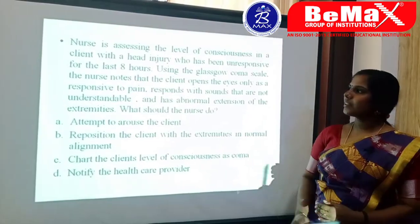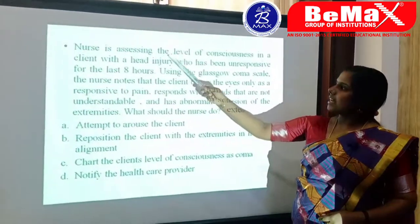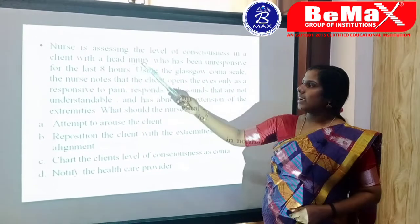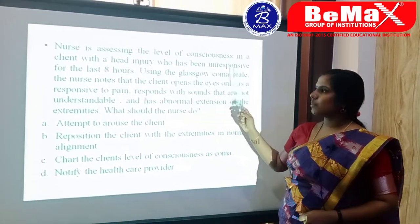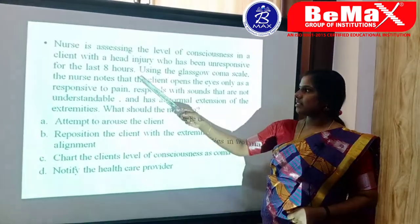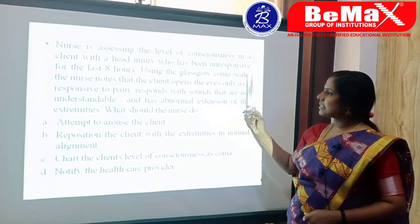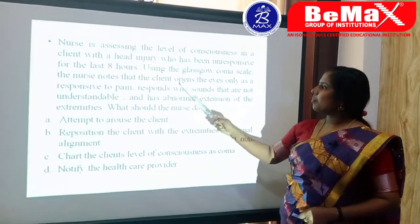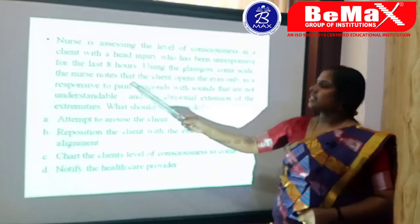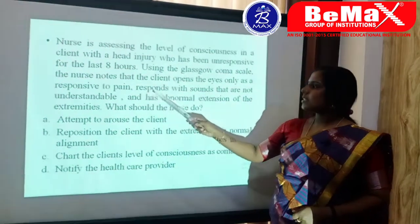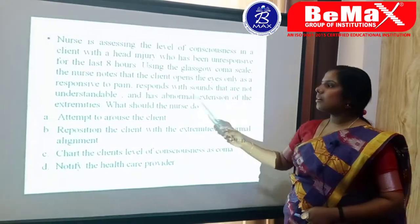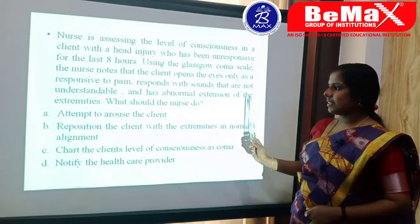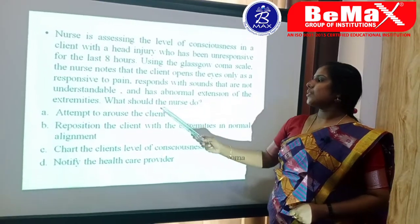Let's move. A nurse is assessing the level of consciousness in a client with a head injury who has been unresponsive for the last 8 hours. Using the Glasgow Coma Scale, the nurse notes that the client opens the eyes only in response to pain, responds with sounds that are not understandable, and has abnormal extension of the extremities. What should the nurse do?